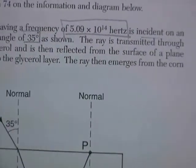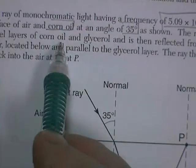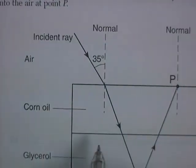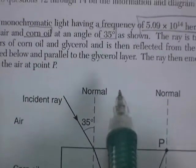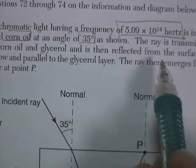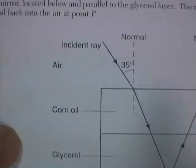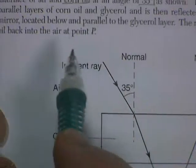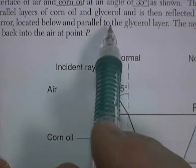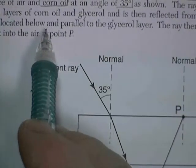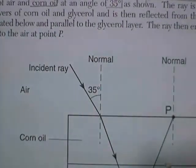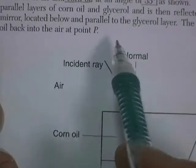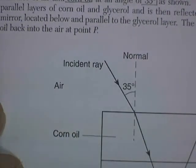The ray is transmitted through parallel layers of corn oil and glycerol. Yeah, that happens a lot. Corn oil and glycerol, delicious. And then it's reflected from the surface of a plane mirror located at the bottom, of course. Where else would the mirror be? Down at the bottom. And then the ray of light reflects back up through the glycerol layer into the corn oil, and the ray emerges from the corn oil back into the air.